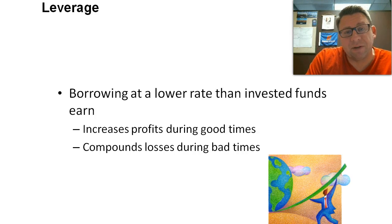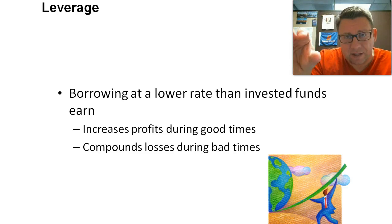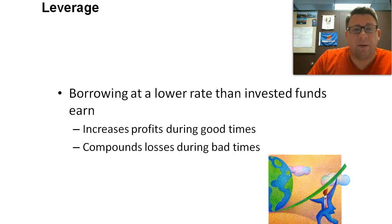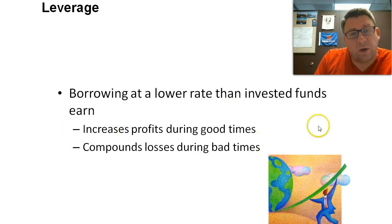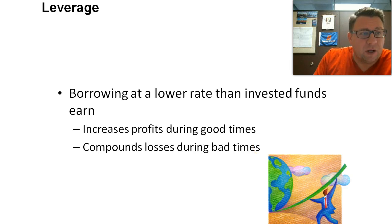Leverage is sometimes called OPM — other people's money. It's a way for businesses to borrow money at a lower rate and invest it in their business, which generates a higher rate of return. Leverage is good and helps increase profits when you have a lot of sales, but you could have bigger losses in downturns. That's the idea of the debt ratio and how it relates to leverage.